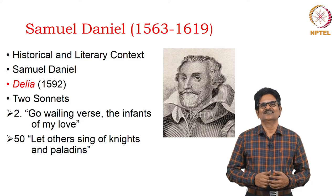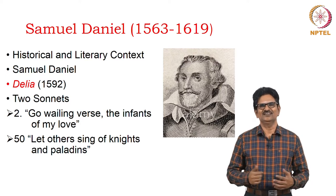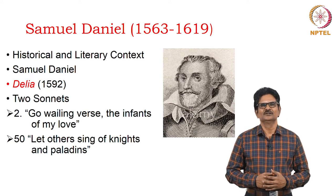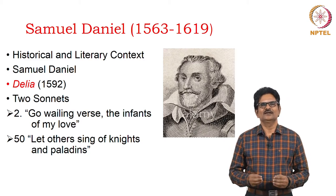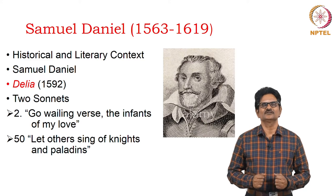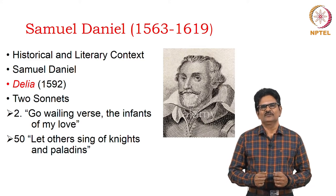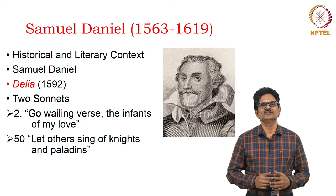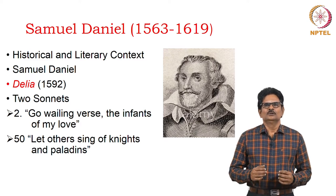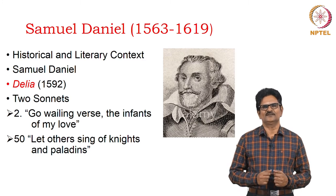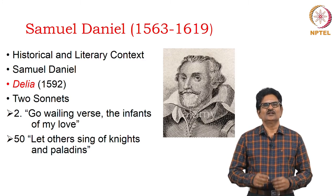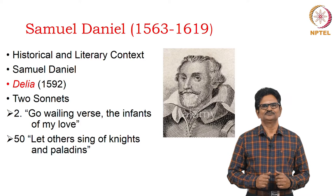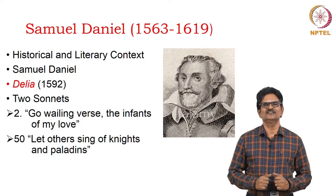Now, we come to another Elizabethan sonneteer Samuel Daniel, who has his own significance in the history of English poetry. We will examine the historical and literary context in which the poet was born, the surroundings in which his sonnet sequence Delia came out in 1592, and two specific sonnets from this sequence: Sonnet 2, 'Go Wailing Verse, the Infants of My Love,' and Sonnet 50, 'Let Others Sing of Knights and Paladins.'